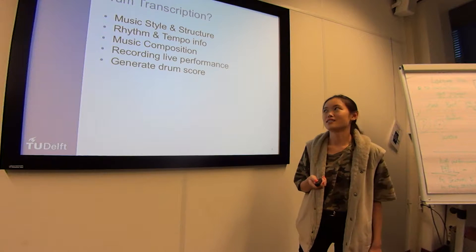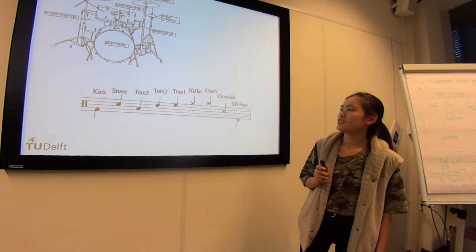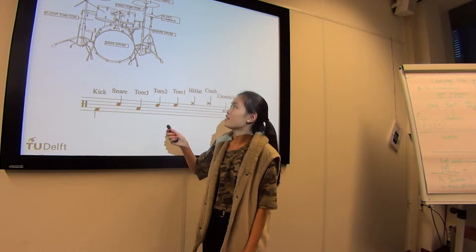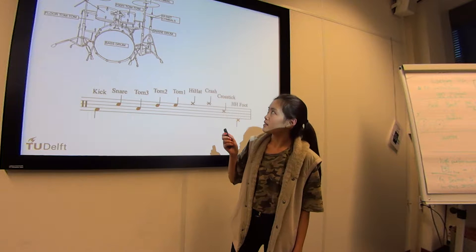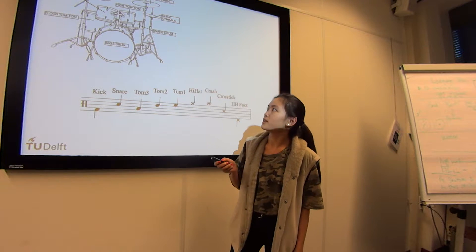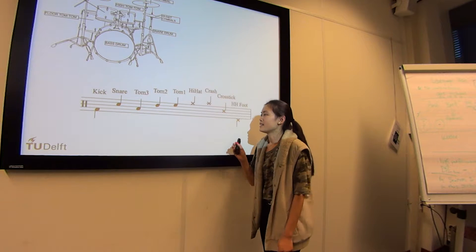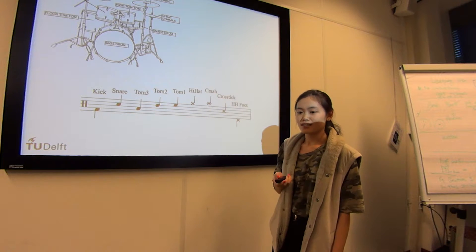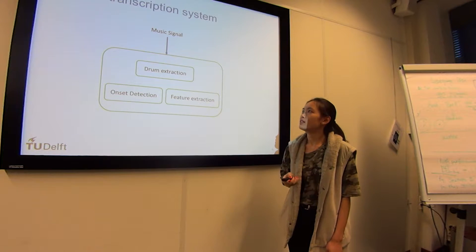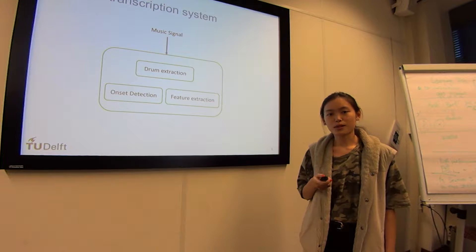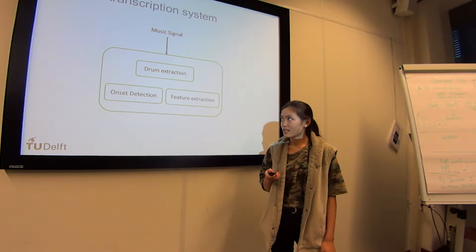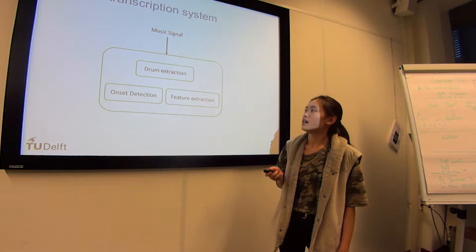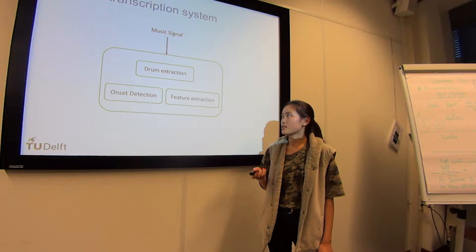This is a basic set of drum kits. It consists of five categories: bass drum, snare drum, hi-hat, two cymbals, and three tom-toms. These are the notations for matching this drum set. As my survey focuses on the transcription process, the visualization part is not included. We identify three components of these systems: drum extraction, onset detection, and feature extraction.